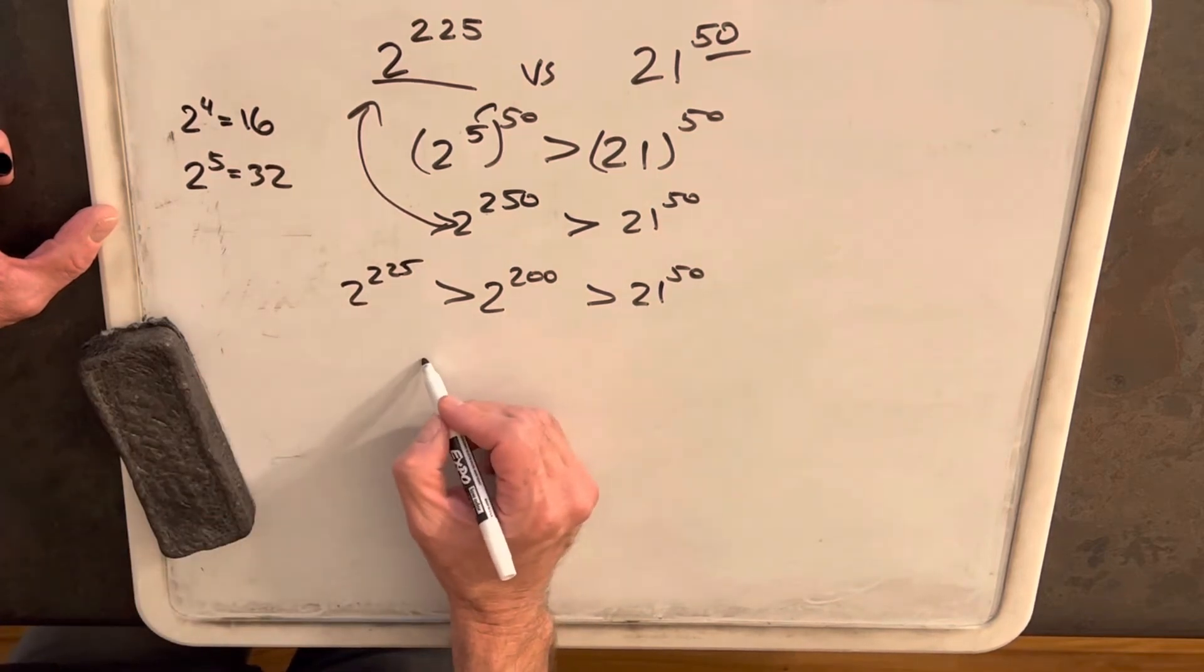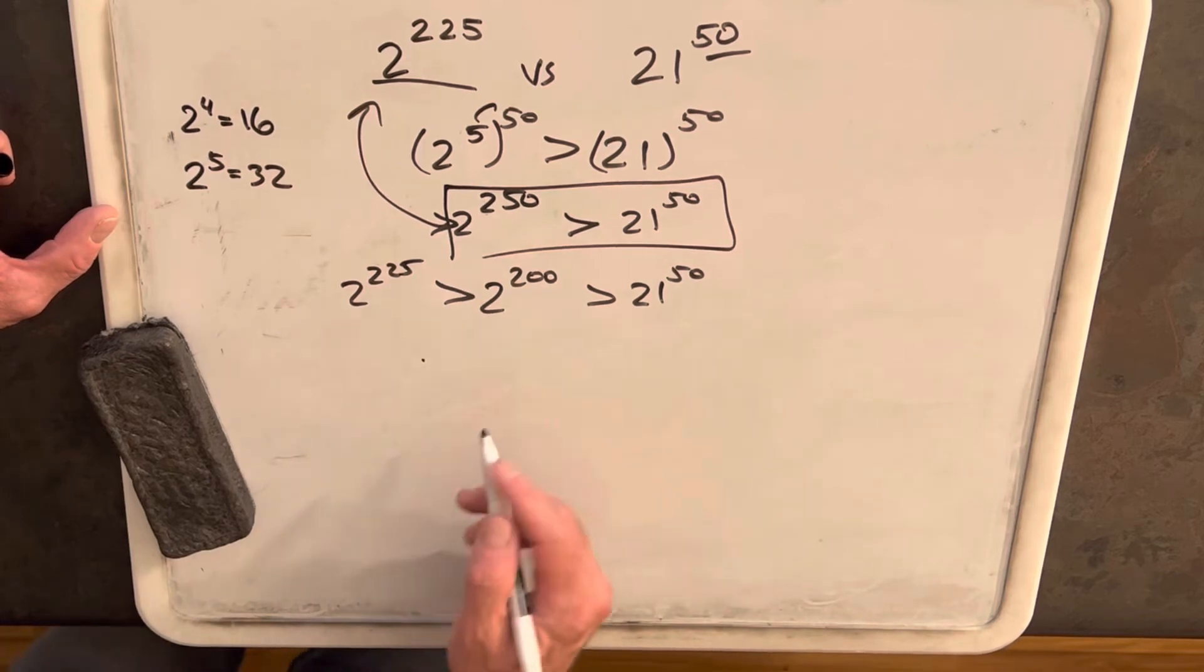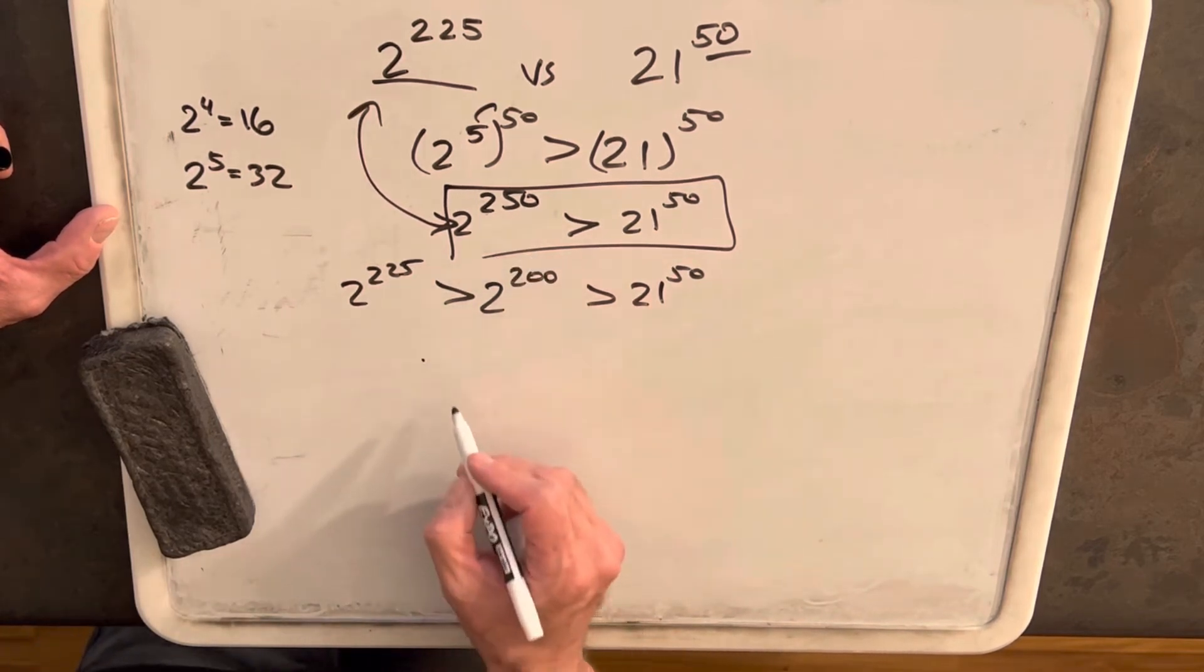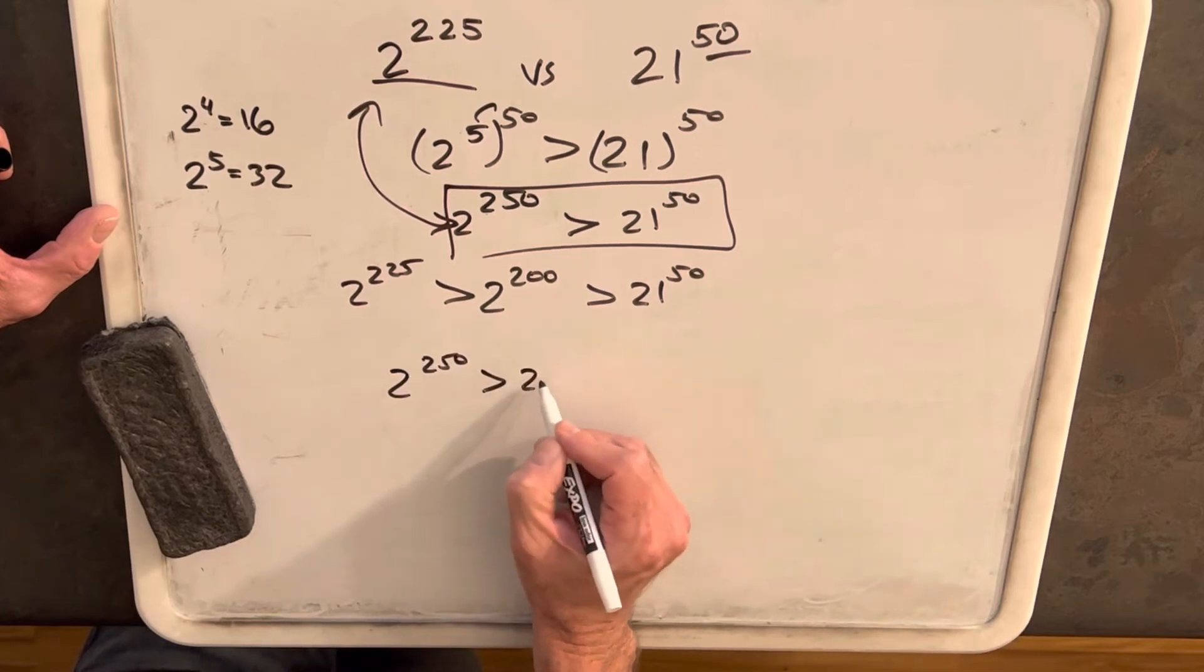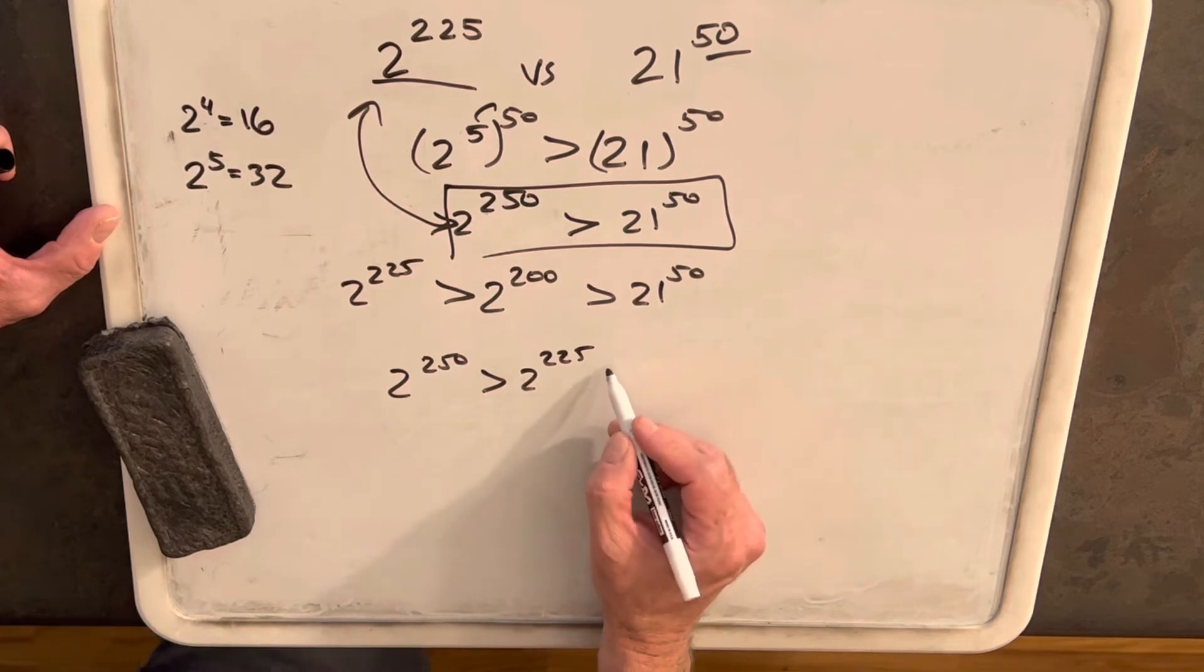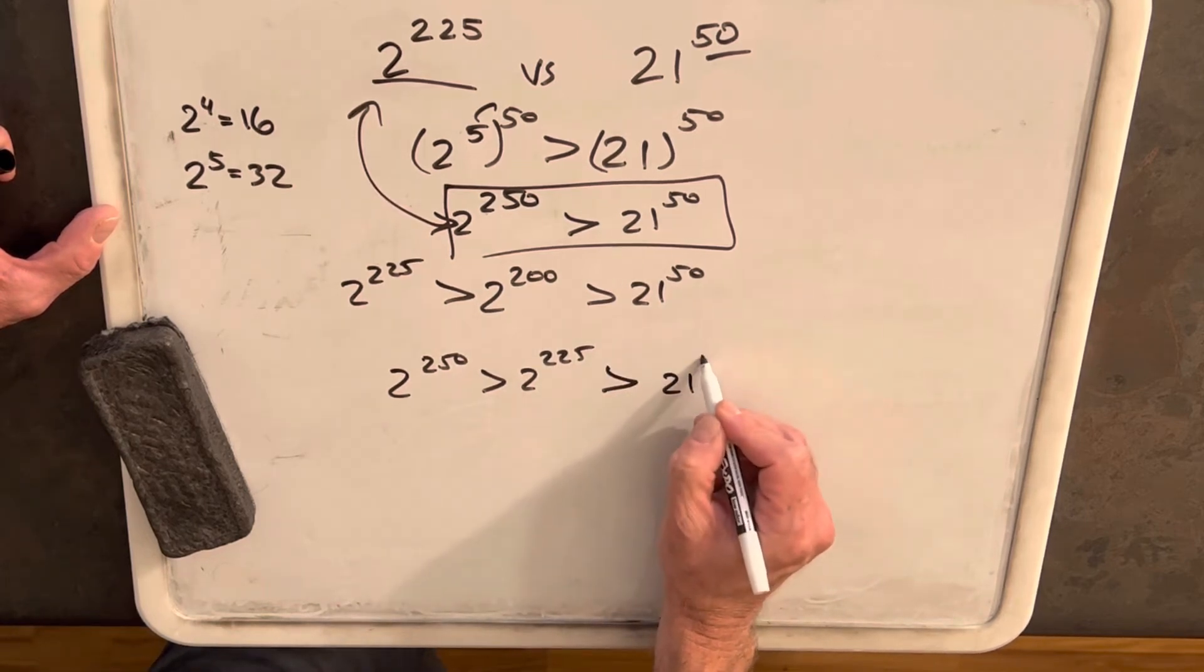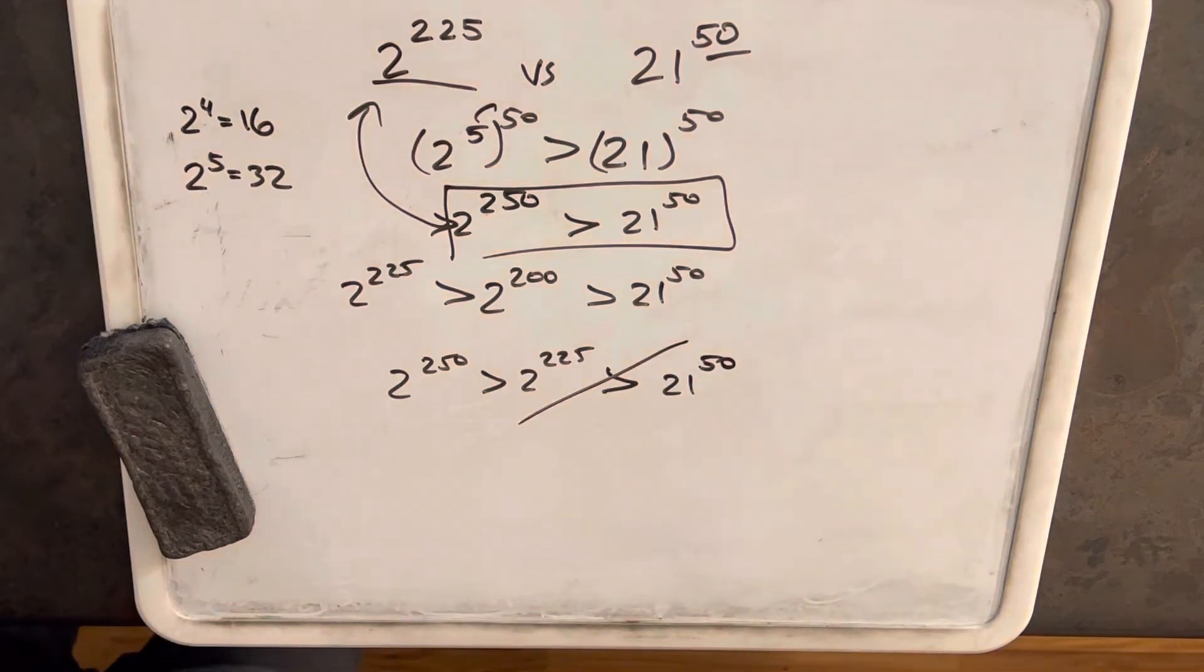But when we get an expression, when we have this, it's inconclusive because 2 to the 250th is greater than 2 to the 225th, but we don't have a relationship. We can't say that it's greater than 21 to the 50th. So I'm going to reject that. We need to try something completely different.